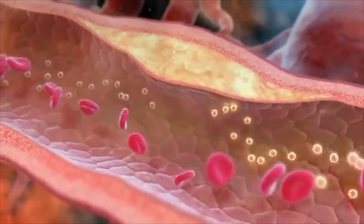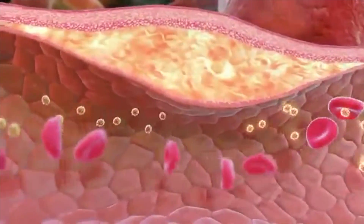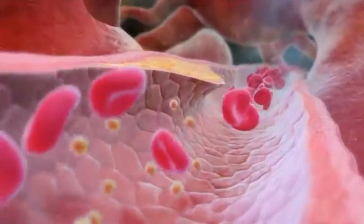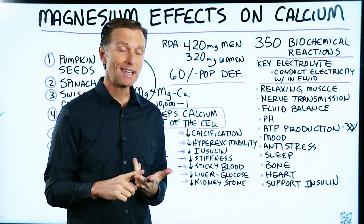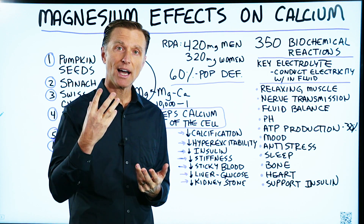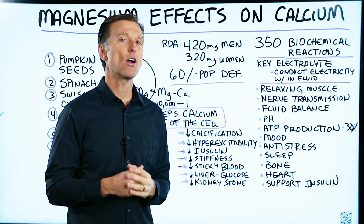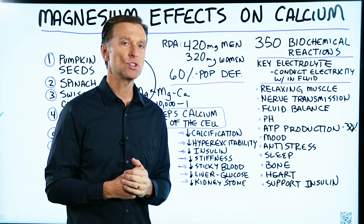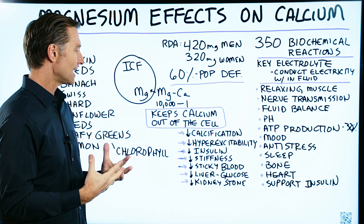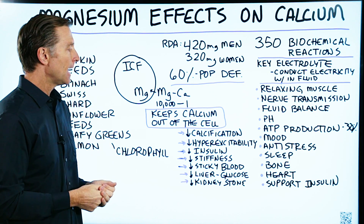If you think about how many medical conditions involve calcification — calcification in the arteries, in your kidneys, in your eyes, on the nerves, in the brain — there are many, many conditions that involve excessive amounts of calcium buildup.